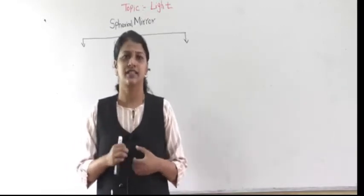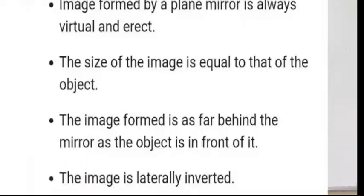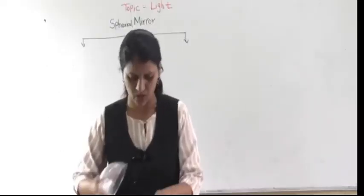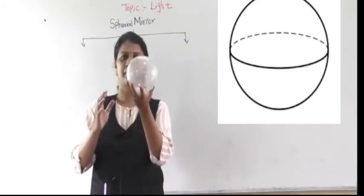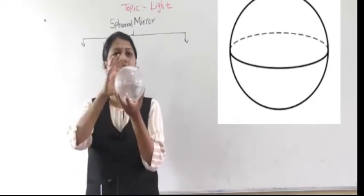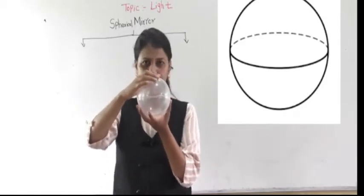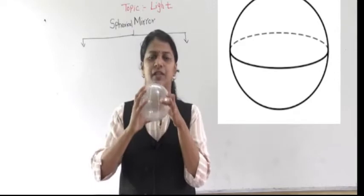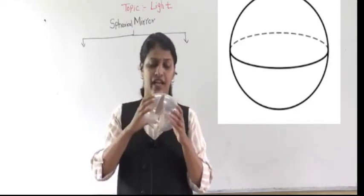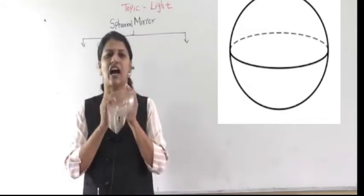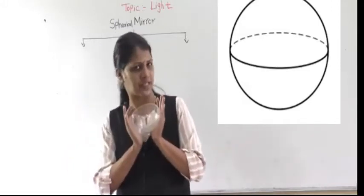We have also discussed the characteristics of the plain mirror in the last video. Now, tell me — what is this shape? Yes, this is a sphere. Now when I cut this sphere into two equal parts, I get this half part. This half part is called a hemisphere.